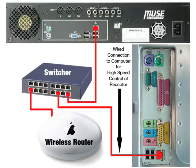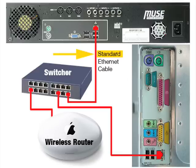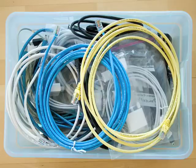So even if you have a wireless network, you should still use a wired connection to the computer that will control Receptor. Make sure to use a standard Ethernet cable when connecting Receptor to your switcher. You don't want to use a crossover Ethernet cable. If you have a box full of cables and aren't sure which are standard and which are crossover, here's a simple way to tell.